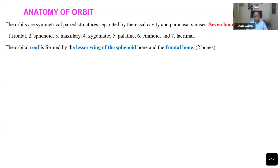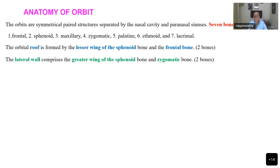The roof is formed by the lesser wing of sphenoid and the frontal bone. So there are two bones involved in the formation of the roof: the lesser wing of sphenoid and frontal bone. The lateral wall comprises the greater wing of sphenoid bone and zygomatic bone. So roof and lateral wall — you can remember 'Rula': R-O for roof and L-A for lateral wall.